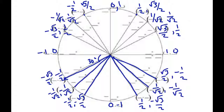This is the important stuff to know, and it will need to be memorized because you will get a pop quiz with this exact circle on a sheet of paper. I will ask you to fill out the ordered pairs, fill out the angles in degrees, and fill out the angles in radians.